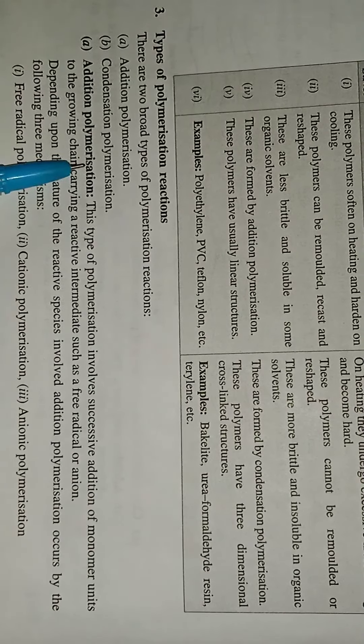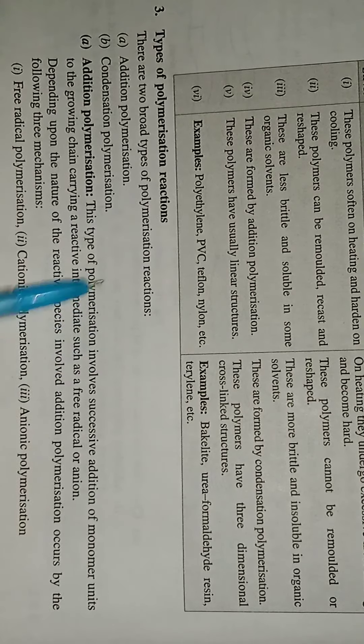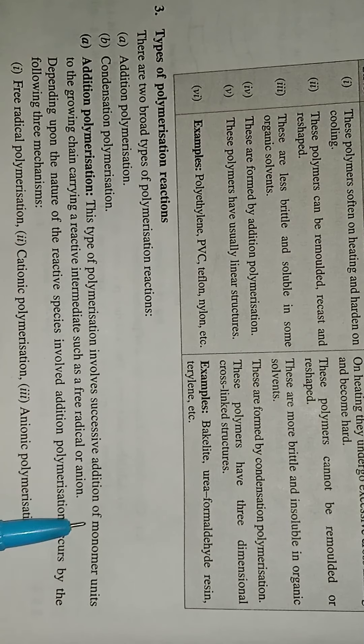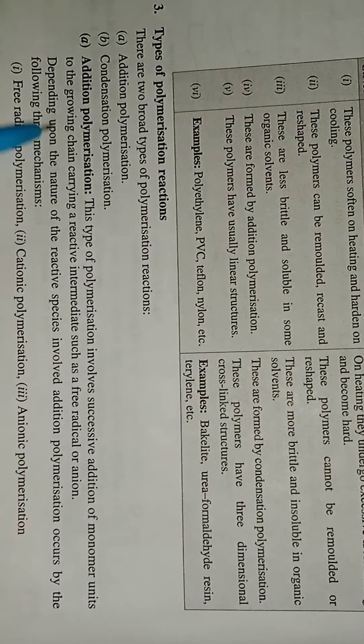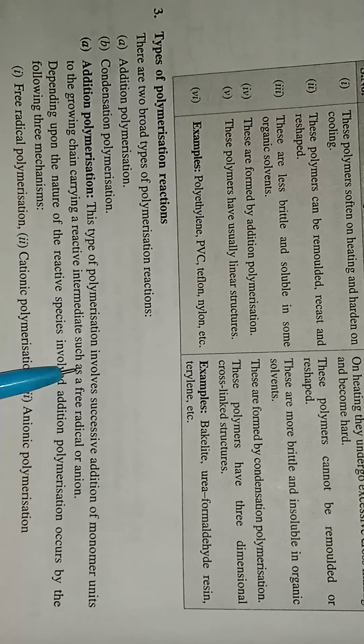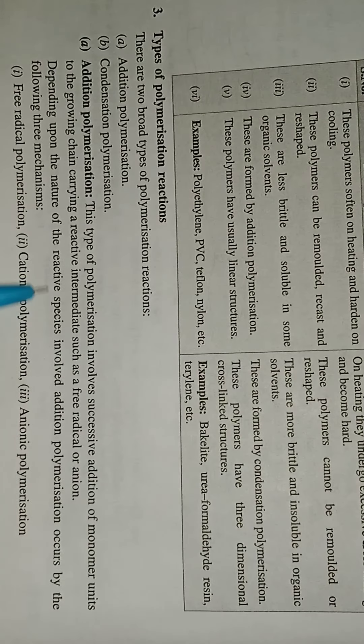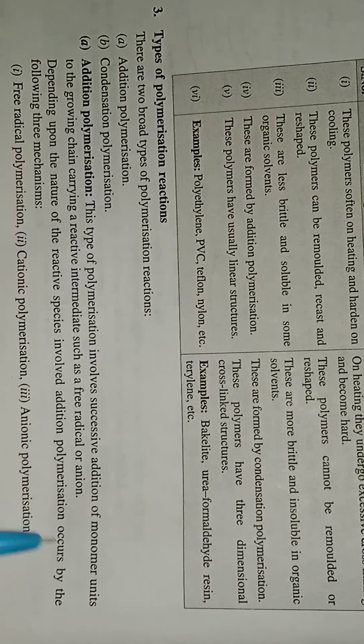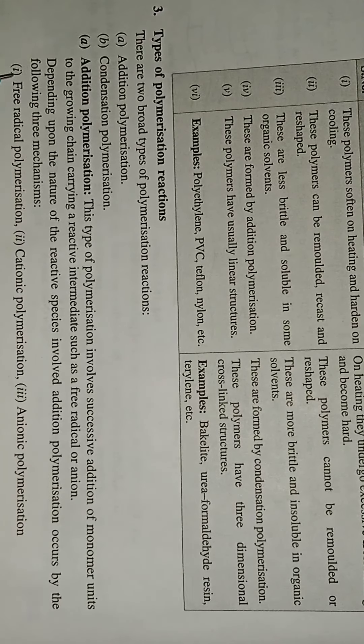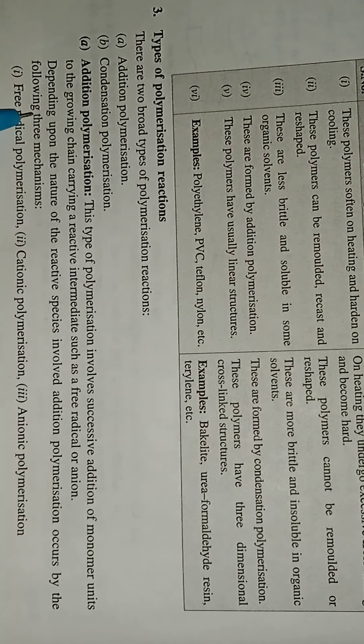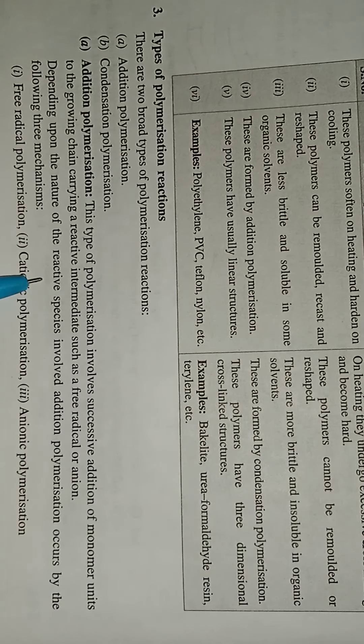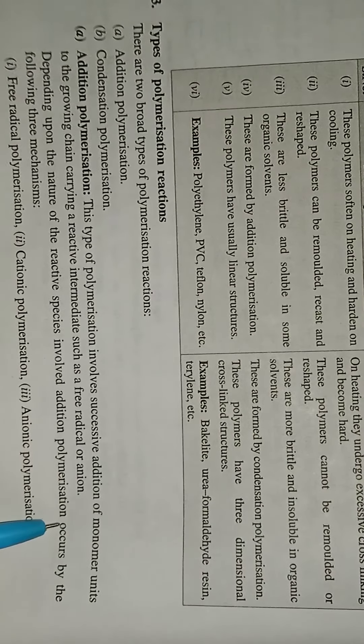First is addition polymerization. This polymerization is the successive addition of monomer units to the growing chain carrying a reactive intermediate such as a free radical or anion. Depending upon the nature of the reactive species involved, addition polymerization occurs by three mechanisms: free radical polymerization, cationic polymerization, and anionic polymerization.